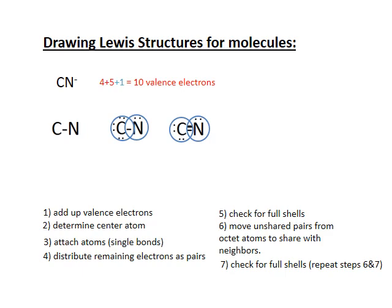Repeating the process — moving another pair between carbon and nitrogen — completes the shell for nitrogen without affecting carbon. This gives three pairs between the atoms, which we call a triple bond. One pair is a single bond, two pairs is a double bond, three pairs is a triple bond — that's essentially the limit. Checking octets: every atom now has an octet.